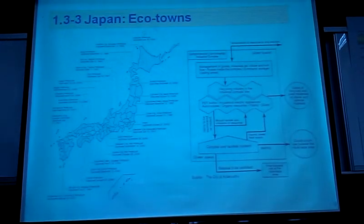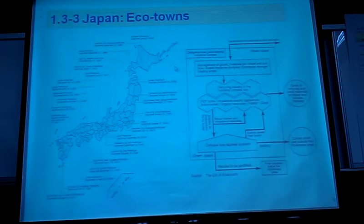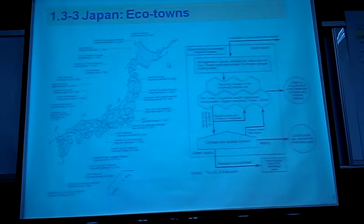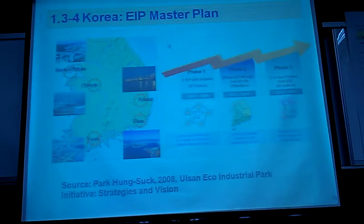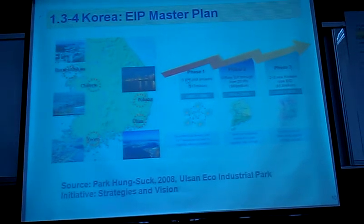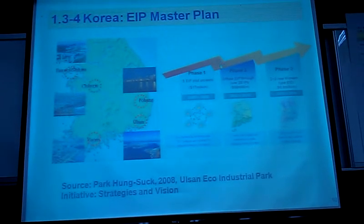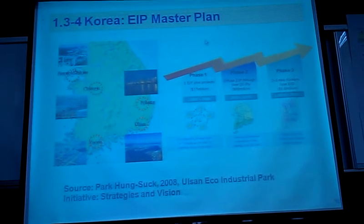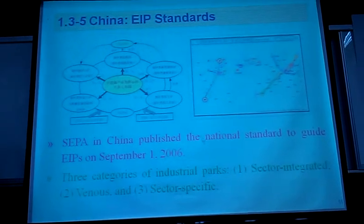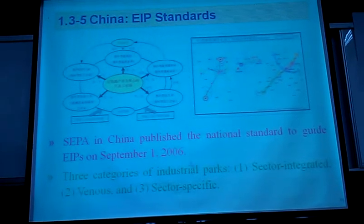Another example is from Japan, called Eco Town, where various techniques allow recovery of several different types of waste throughout the industrial park. The Korean government has been very ambitious in developing EIP, setting up a master plan from 2005 to 2020 with a roadmap developed by their Ministry of Economic Affairs and Ministry of Environment. Recently, China announced its national standard to guide EIP in the year 2006, and several major Eco Industrial Parks have been implemented in major cities.